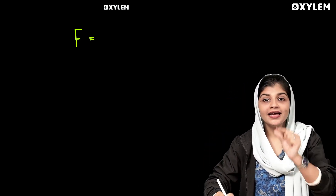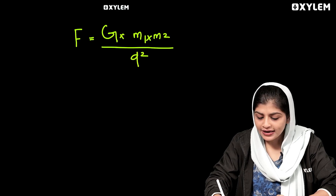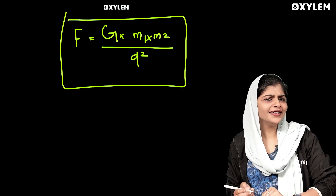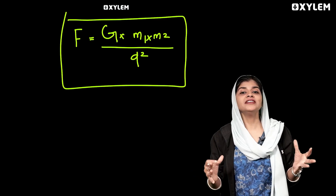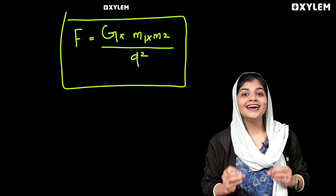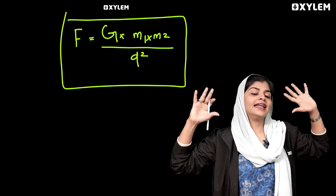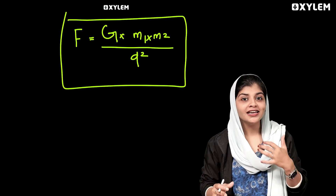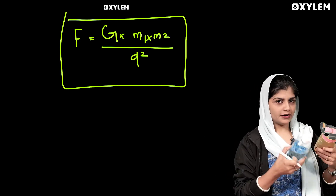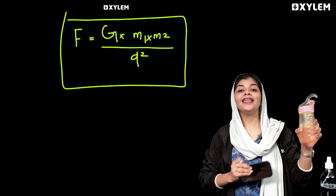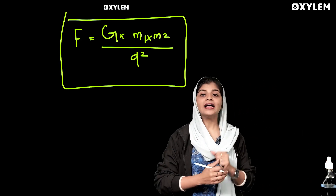Our equation is F is equal to G into M1 into M2 divided by D square. This is our equation. If we are going to study these things — problems in the universe and above the universe — that means they have an attractive force. We have an attractive force. If you have an object, you will have an attractive force.